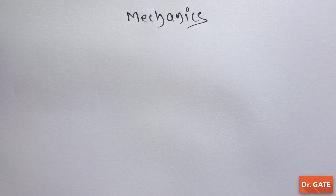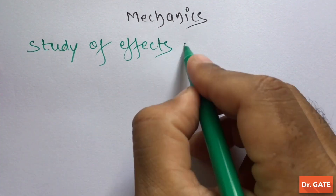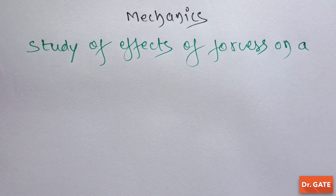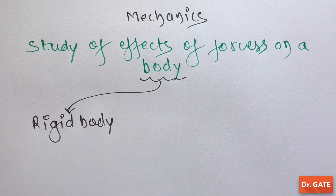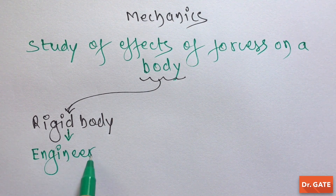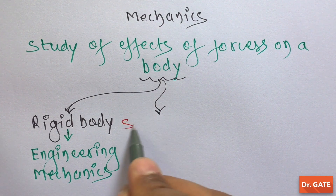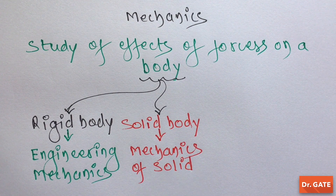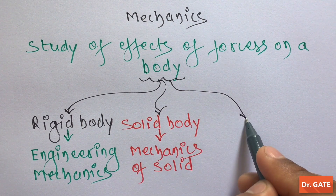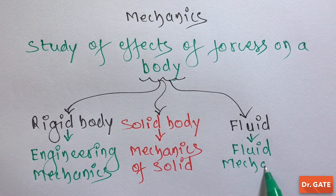So first of all, what is Mechanics? It is the study of effects of forces on a body. When this body is a rigid body, then it is Engineering Mechanics. And when this body is a solid body, then it is Mechanics of Solid. And when this body is a fluid, then it is Fluid Mechanics.